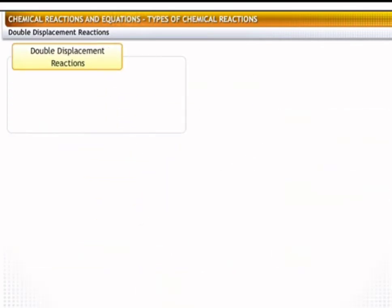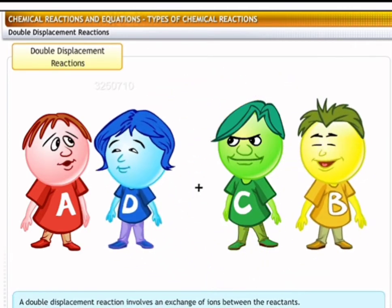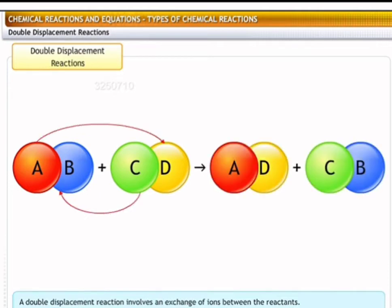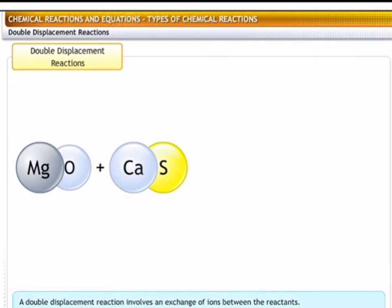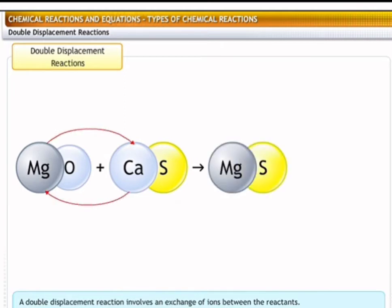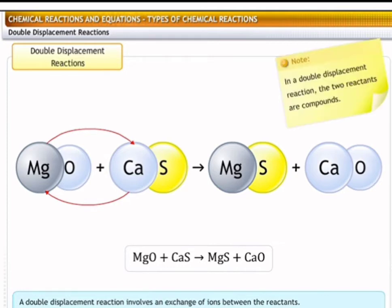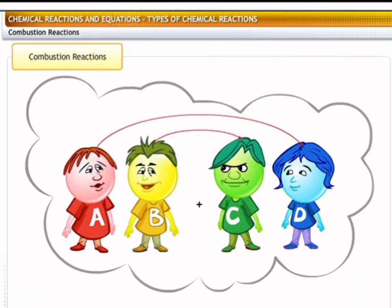A double displacement reaction involves an exchange of ions between two compounds. The general form is: AB and CD undergo double displacement to form AD and CB. A classic example is the reaction of magnesium oxide with calcium sulfide, where magnesium and calcium ions interchange their places to form magnesium sulfide and calcium oxide. This is known as a double displacement reaction because two compounds are formed by the displacement of magnesium and calcium ions with each other. When both reactants in a reaction are compounds, it is a double displacement reaction.